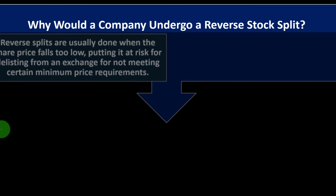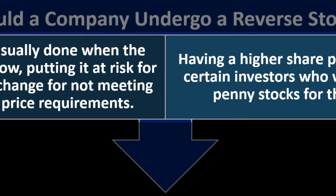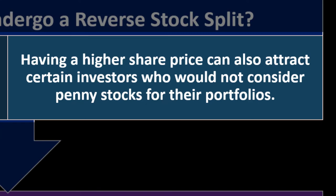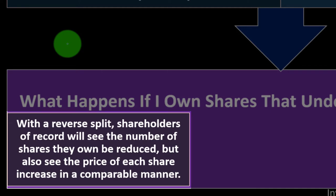Why would a company undergo a reverse stock split? Reverse splits are usually done when the share price falls too low, putting it at risk for delisting from an exchange for not meeting certain minimum price requirements. Having a higher share price can also attract certain investors who would not consider penny stocks for their portfolios. With a reverse stock split, shareholders of record will see the number of shares they own reduced, but also see the price of each share increase in a comparable manner.